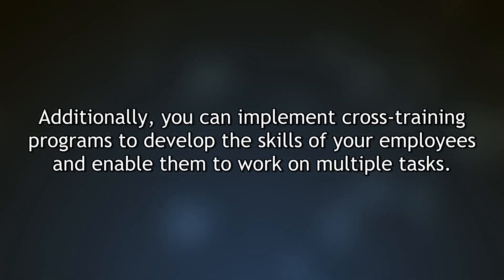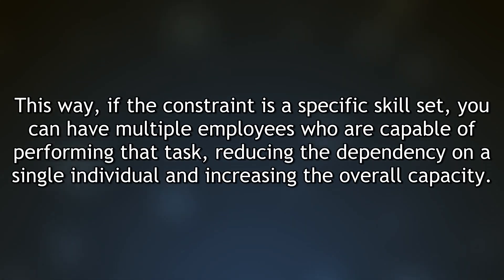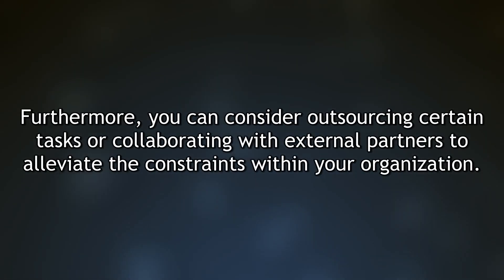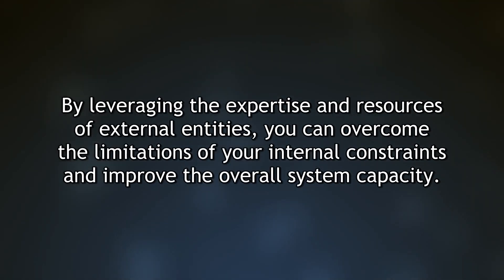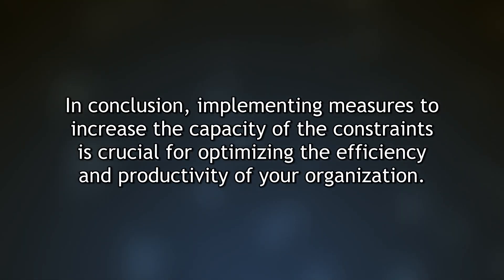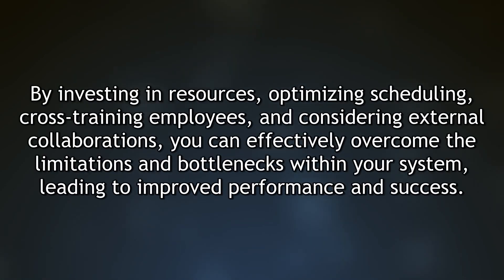You can also implement cross-training programs to develop employee skills, enabling multiple employees to perform a constrained task and reducing dependency on a single individual. Furthermore, consider outsourcing certain tasks or collaborating with external partners to alleviate internal constraints. In conclusion, investing in resources, optimizing scheduling, cross-training employees, and considering external collaborations can effectively overcome limitations and bottlenecks, leading to improved performance and success.